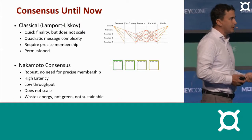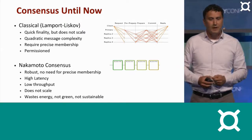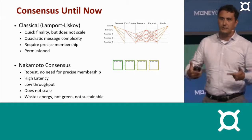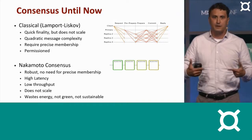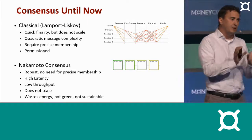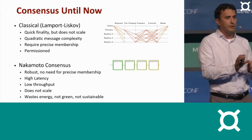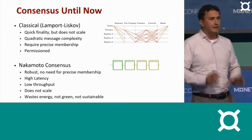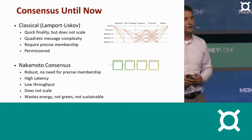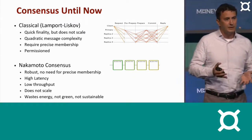They require quadratic communication among the people who are participating. And they require that you know everybody in the system that is supposed to participate in the decision. Their security comes down to judicious overlap between quorums of people who say, yes, I saw this, and yes, I know you saw it, and now I can go ahead and commit something.